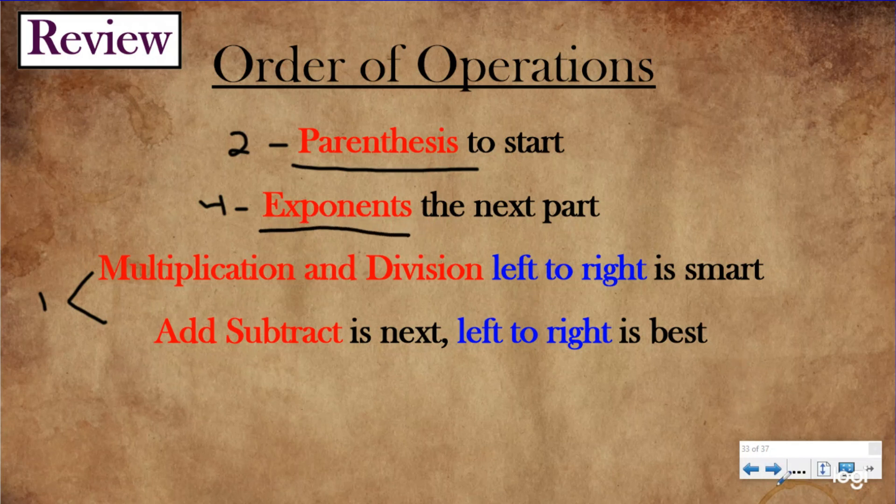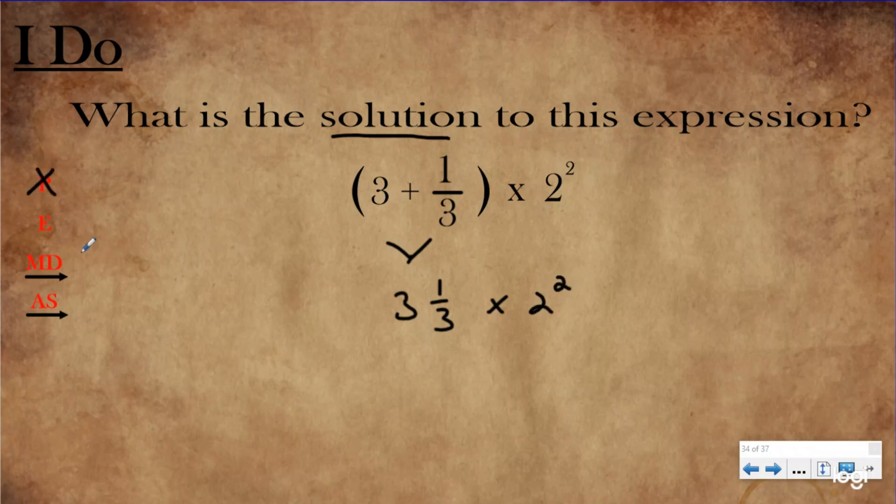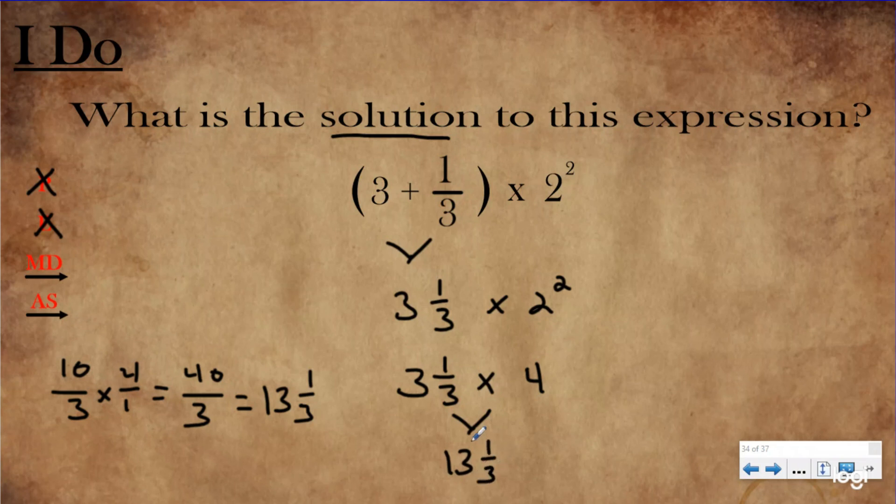The I Do is asking me for the solution to this expression. I have parentheses, I need to solve my parentheses first to get rid of them. I need to group these together, so that's going to be 3 and 1/3, then I need to rewrite this. Now I can't skip to multiplication because I have an exponent. I need to solve this exponent first. So 2 squared is really saying 2 times 2, which is 4. Now I've simplified my exponents and all I have is this multiplication left. So I'm going to solve this: 10/3 times 4/1, which is 40/3, and when you divide that you get 13 and 1/3.